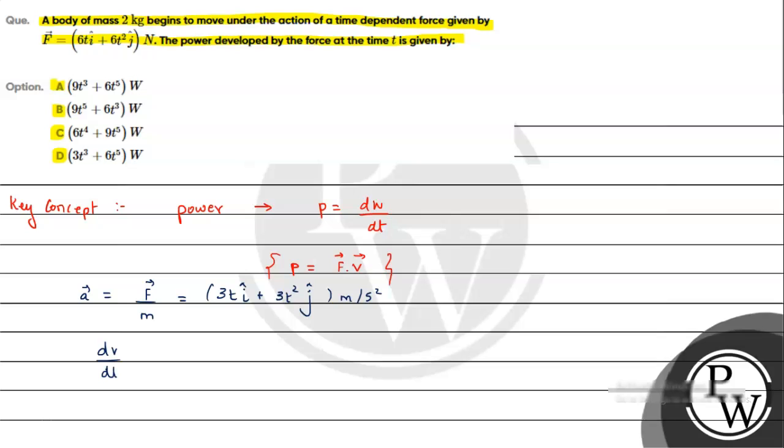We can write acceleration as dv/dt = 3t²î + 3t²ĵ. Now we can shift this dt on this side and integrate it. On integration, we can say limit from 0 to t and here 0 to v.